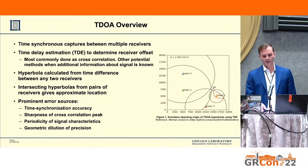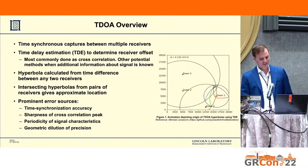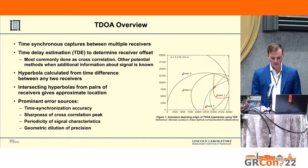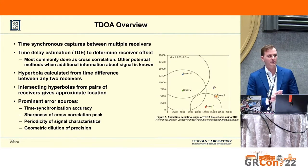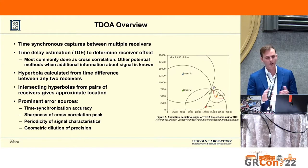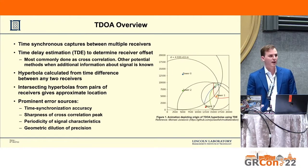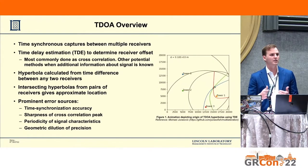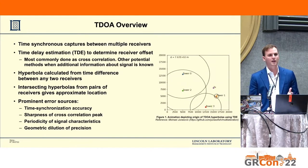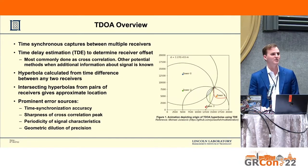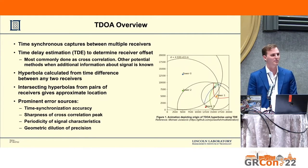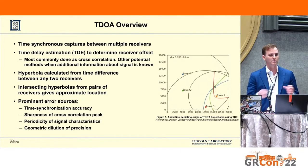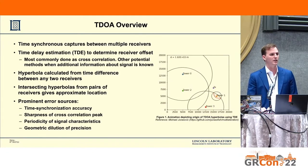For those of you not as familiar with TDOA, I'll take a quick moment to introduce it. It's a technique used to calculate the location of a transmitter by using the difference in arrival time between three or more receivers. By calculating the difference in arrival time you can figure out all possible locations that signal could have come from to explain that time difference. Then through the different pairs you can estimate an actual geolocation.